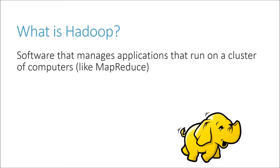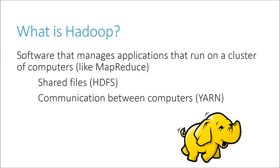Hadoop makes sure that all of your data is distributed and where it needs to be, and that every computer can access the data it needs. MapReduce is just one application that can run on top of Hadoop. Hadoop offers HDFS — the Hadoop Distributed File System — a mechanism for sharing files across the cluster in a reliable manner. It also manages all the communication between computers through a technology called Yarn, keeping track of what information is where and figuring out what data goes to which computer.